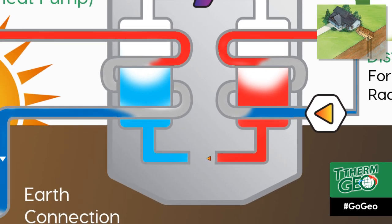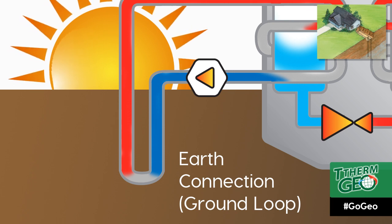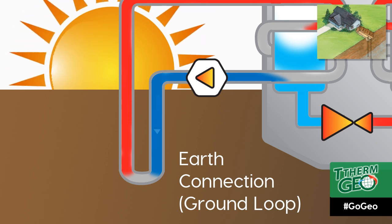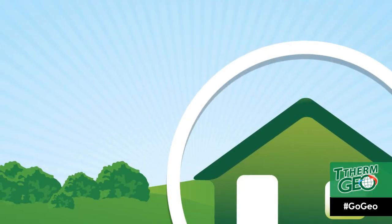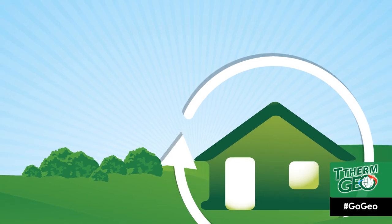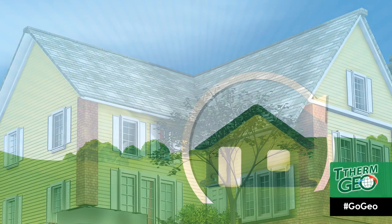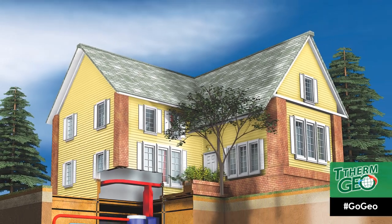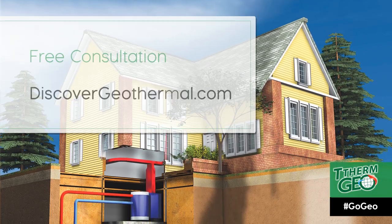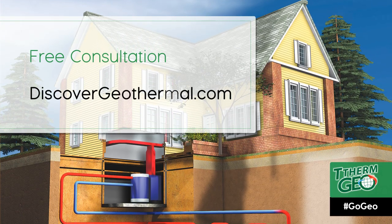Once the refrigerant gas releases its heat to the distribution system, the gas cools to a liquid and travels back to the earth loop heat exchanger to absorb the heat from the earth connection, and the cycle is repeated. We hope this video has provided a better understanding of exactly how a geothermal system works, along with the possible configurations for your home. If you are ready to go geo, feel free to search our partner directory and request a free consultation.